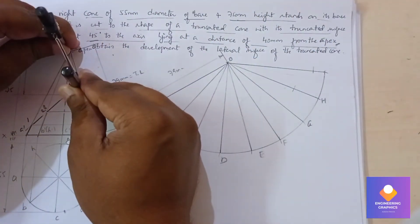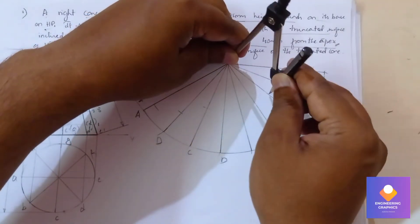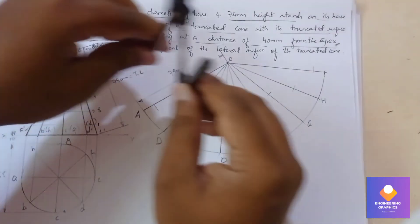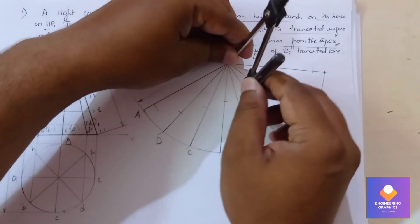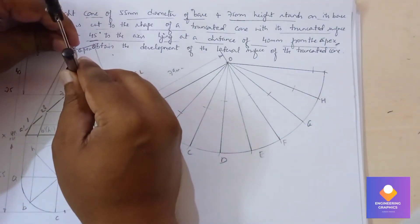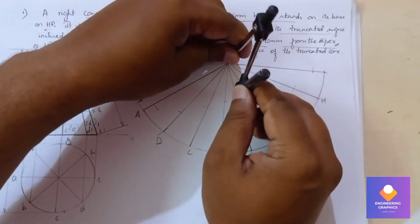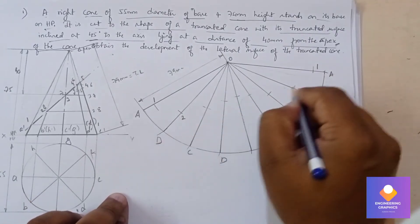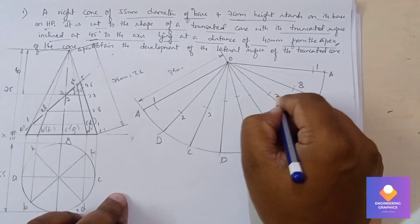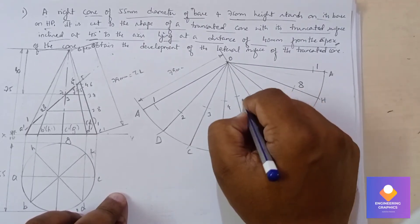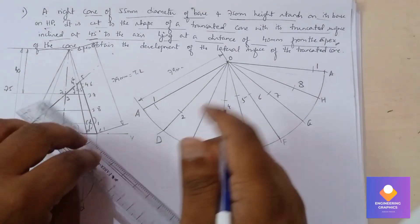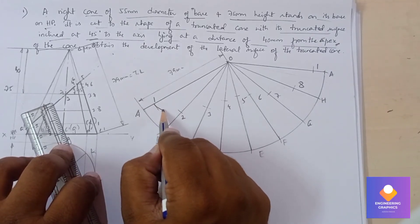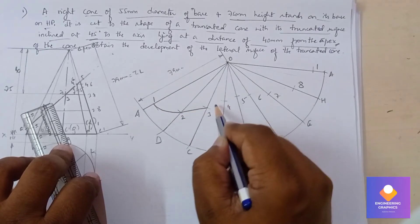Cut points 3 and 6, then 4 and 6 as well. With point 5 remaining, cut it on the development. Mention the names: 3 and 7, 4 and 6, and 5. Now join all these points — you can use a scale or a French curve, since it is a cone, to join all these points with a smooth curve.